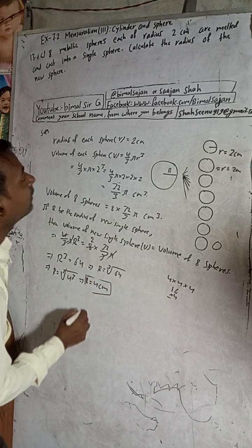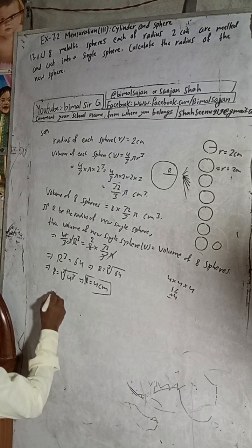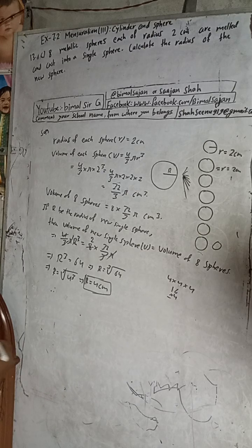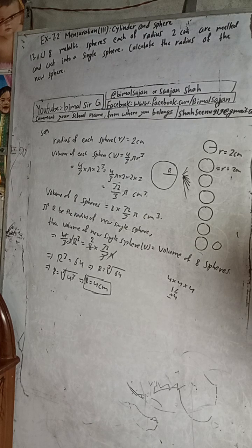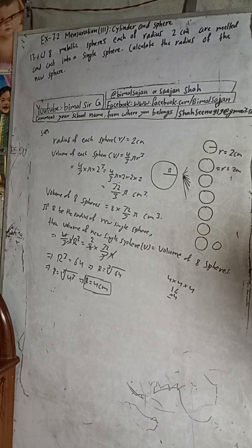Therefore the radius of the new sphere is 4 cm. This is the complete solution. If you find this video useful, please like, comment, and subscribe to our channel.